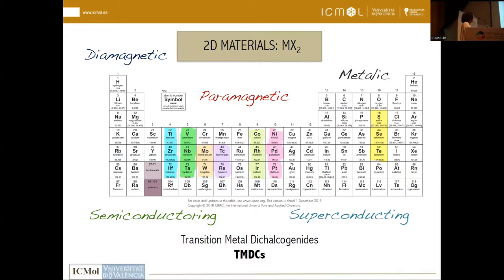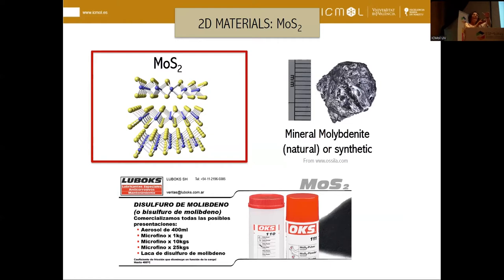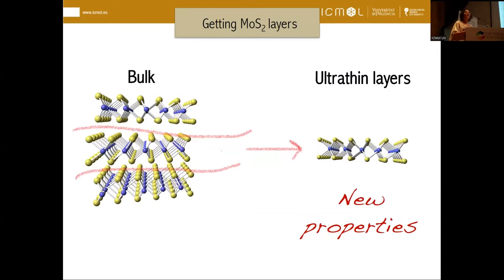Among all these systems, the most famous one is molybdenum disulfide, which I'm going to use in my talk today. It's a mineral — you can find it in nature — but you can also synthesize it. You can buy kilograms of it because it has been used for several years as a dry lubricant due to this multi-layer system. But what we are interested in is exfoliating it to get ultra-thin layers and playing with the new properties of this system.